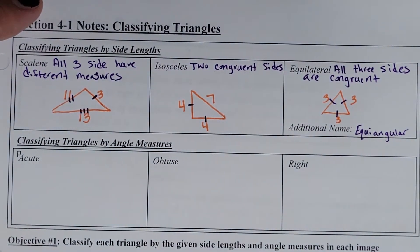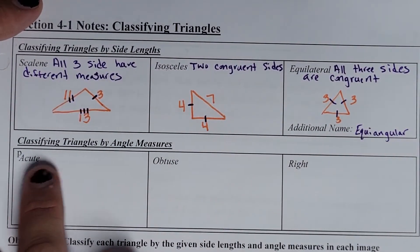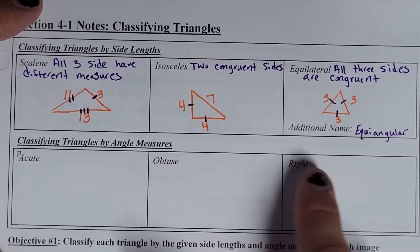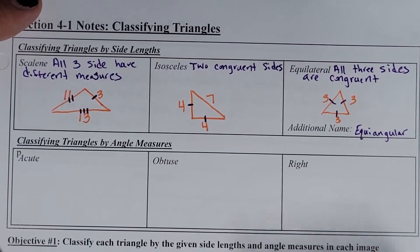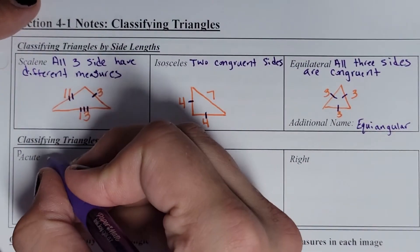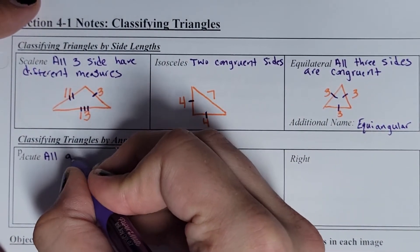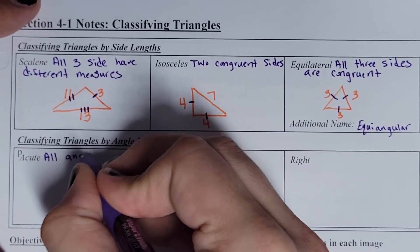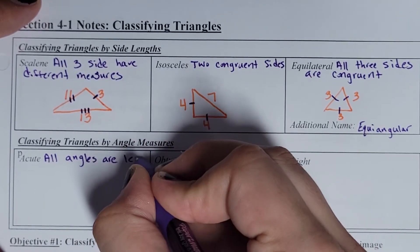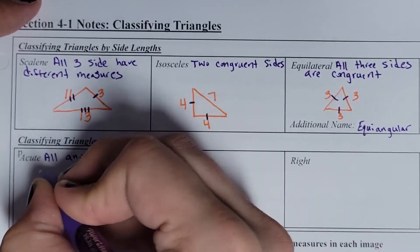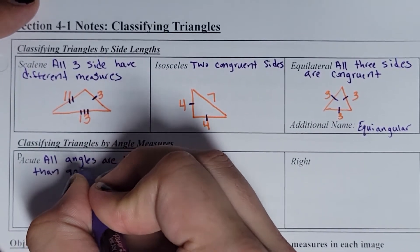When you go to classify your triangles, you always have to choose one of those words — scalene, isosceles, or equilateral — as your first answer. But they're going to come in two answers, because you also have to choose if they're acute, obtuse, or right. An acute triangle is a triangle that has all angles less than 90 degrees.